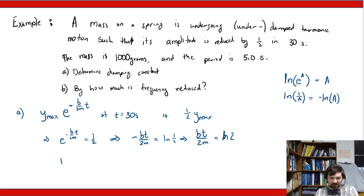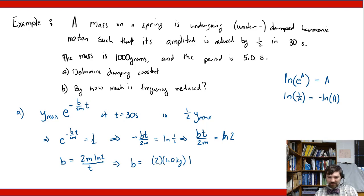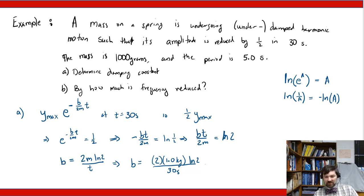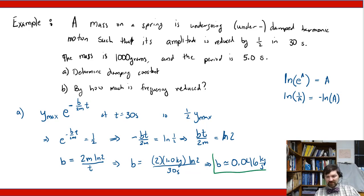So b equals 2 times 1 kilogram times the natural log of 2 divided by 30 seconds. Putting that into a calculator: 2 times ln(2) divided by 30 gives 0.046. So b has a value of approximately 0.046 kilograms per second. That gives us our damping constant.